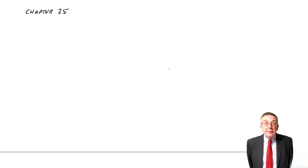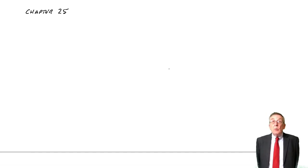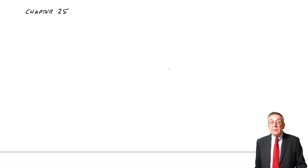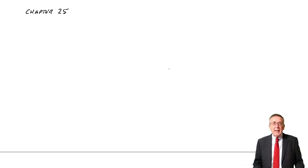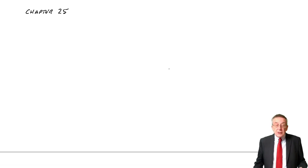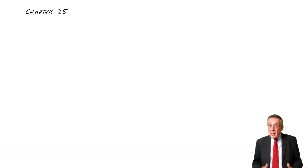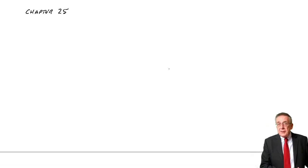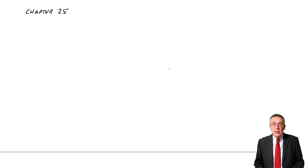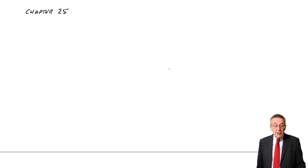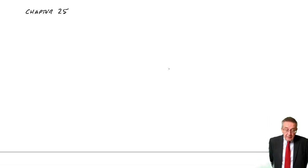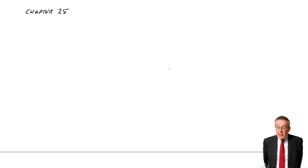This lecture is on chapter 25 of the free lecture notes, which — assuming you've printed it out — you can see says 'group accounts: further points.' It's the last chapter on group accounts or consolidations, and there are no more numbers to learn. We've dealt with all the numbers producing the statement of financial position and the statement of profit or loss. However, you can — and probably will — be tested on the two points in this chapter. I don't really want to read it all to you, but I need to stress a few things.